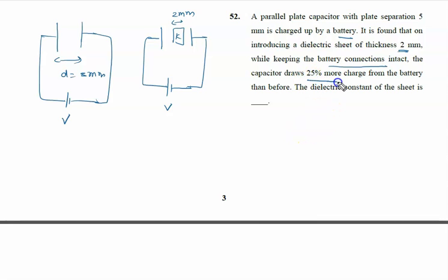The capacitor draws 25% more charge. Initially, Q charge is drawn. Now the charge drawn is Q dash. That Q dash is given by 25% more. So we can say it is 125 by 100 into Q. The dielectric constant of the sheet is what we have to calculate.